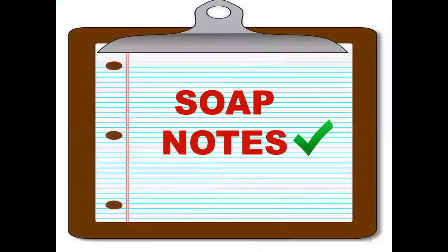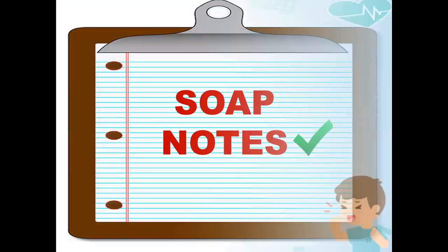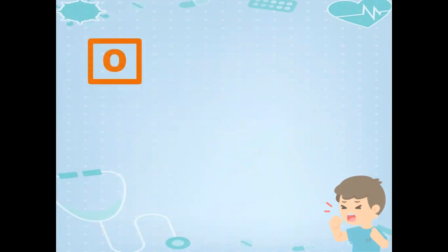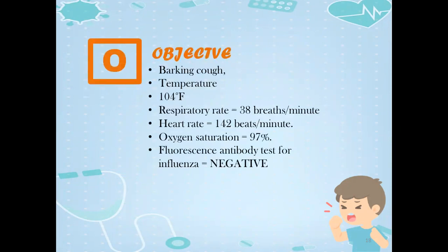The case will be solved using the SOAP approach. Subjective findings: cold, coughing, productive secretions of whitish thick phlegm, shortness of breath. Objective findings: barking cough, temperature 104 degrees Fahrenheit, respiratory rate 38 breaths per minute, heart rate 142 beats per minute, oxygen saturation 97%, fluorescence antibody test for influenza negative.